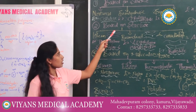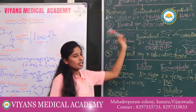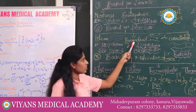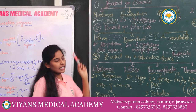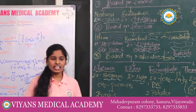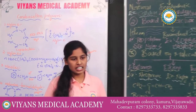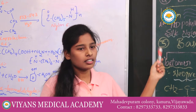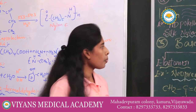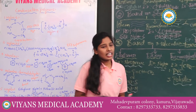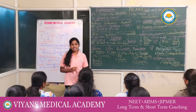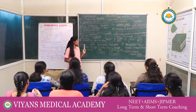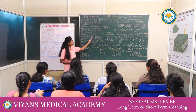The second classification is based on structure. Polymers are classified into three types: linear, branched, and cross-linked. Linear polymers have high density, high melting point, and high tensile strength; examples are high-density polythene, silk, and nylon 6,6. Branched polymers have side chains, giving low density and low melting point; examples are amylopectin and glycogen.